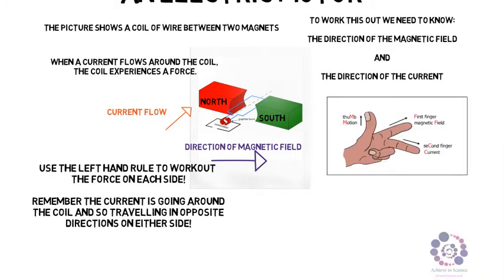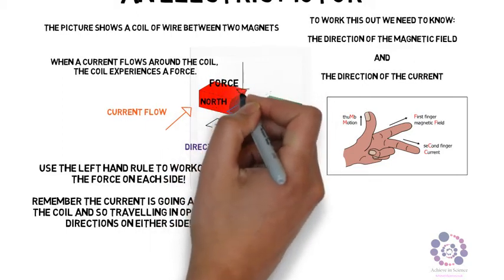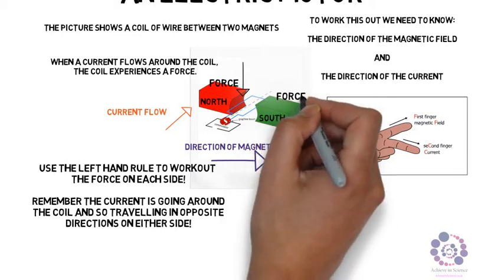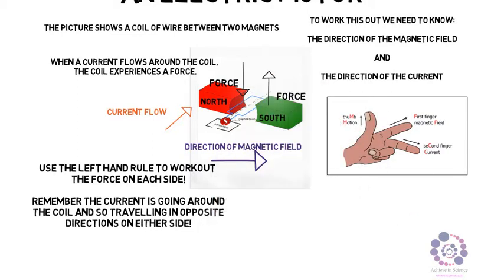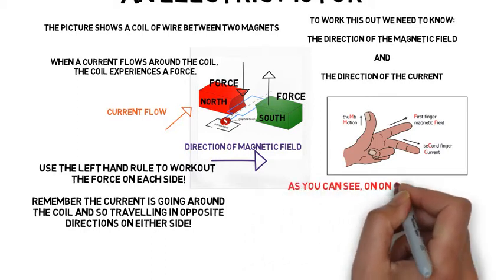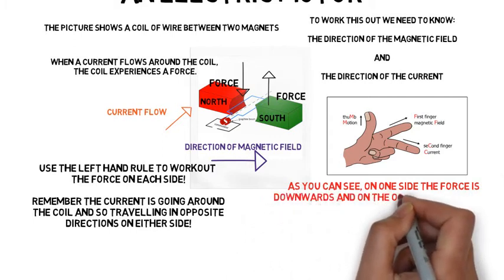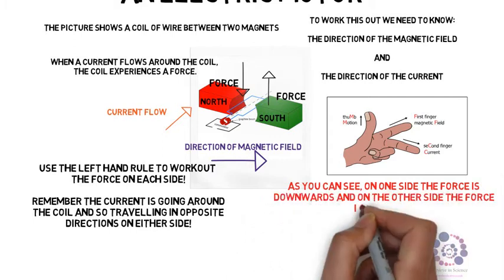So using the left hand rule, you can determine the force on the north side is therefore downwards, whereas the force on the right hand side, the south side, is therefore upwards. As you can see, on one side the force is downwards and the other is upwards. This causes the motor to rotate in an anti-clockwise direction.